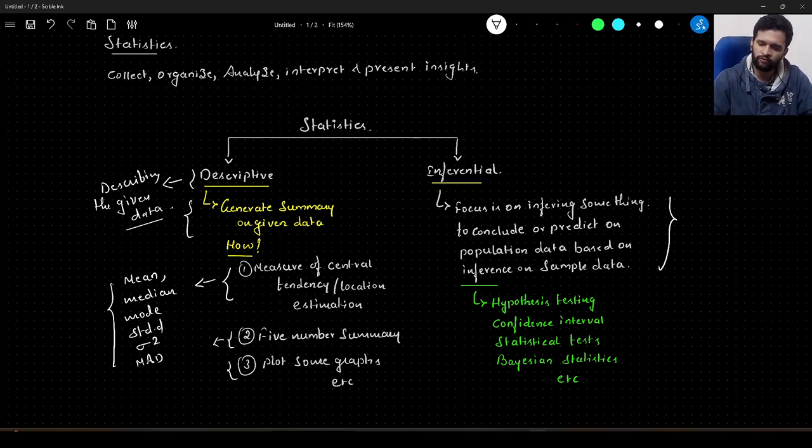What all we will study in inferential statistics: we will study hypothesis testing. Within this, we will have null hypothesis and alternate hypothesis. We will study confidence intervals, statistical tests—there are many tests: z-tests, t-tests, chi-square tests, and many others. We will also learn about bias and statistics.